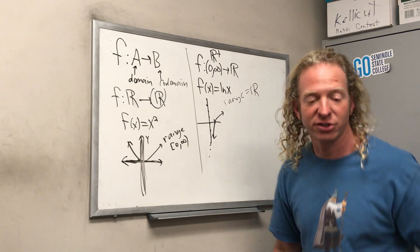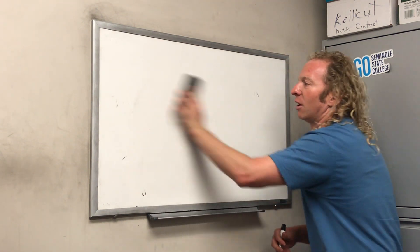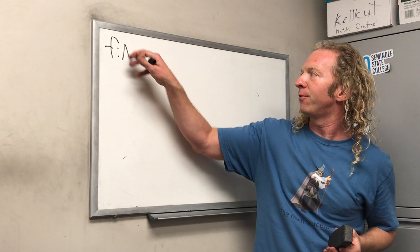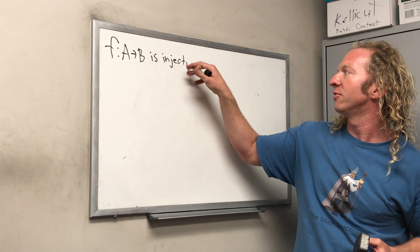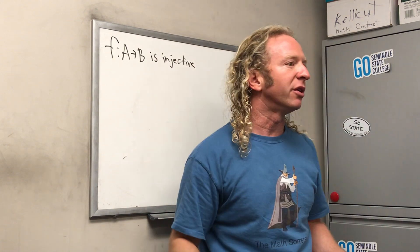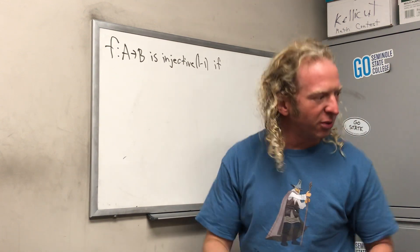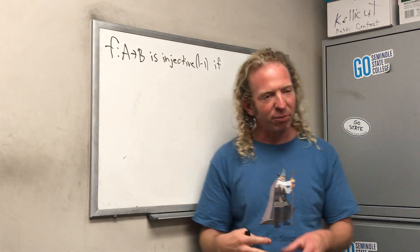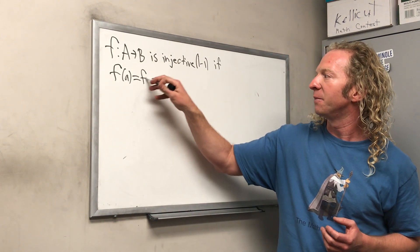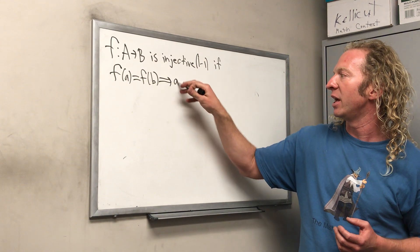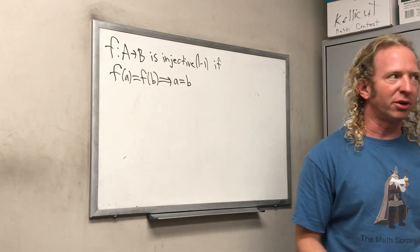Let's talk about injective functions — they're super key. We say a function f from A to B is injective, also called one-to-one, if whenever the outputs are the same, the inputs are also the same. So equal outputs give rise to equal inputs: if f(a) = f(b), this implies that a = b.